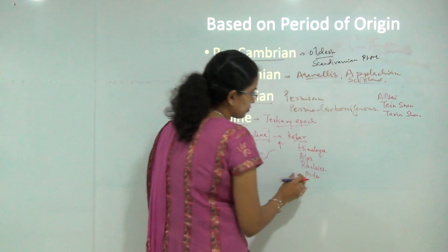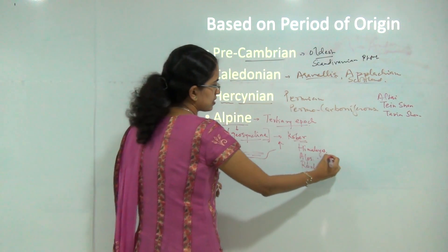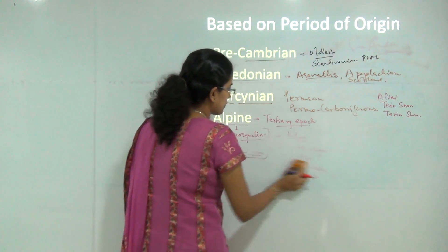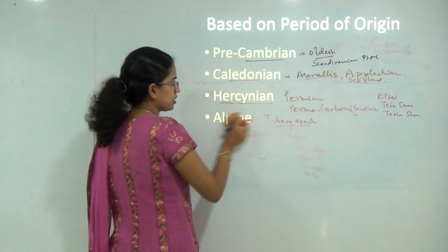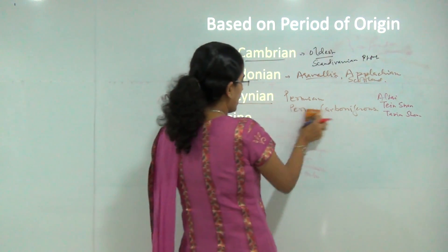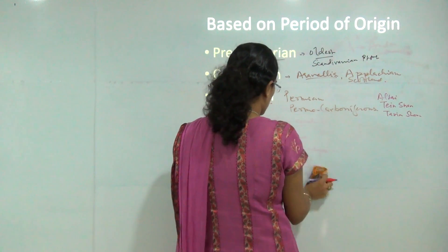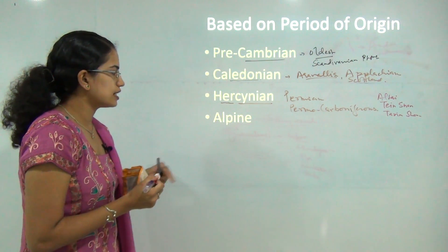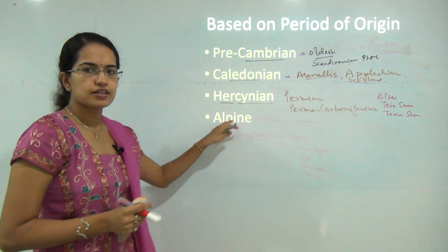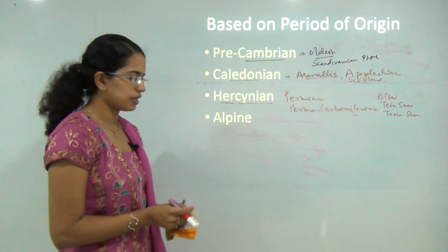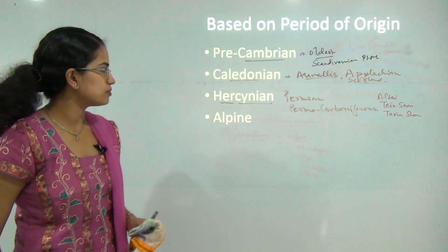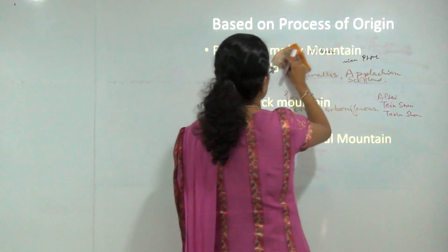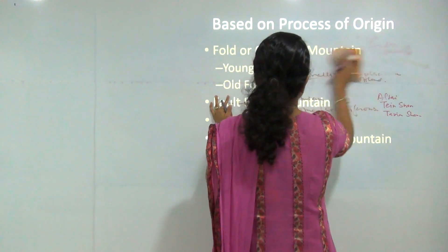The Alpine system covers North America, South America, central Europe, and North Asia. Most of the mountains formed under the Alpine period will be covered under the theories of mountain building discussed further. The most important classification we will discuss today is based on the process of origin.